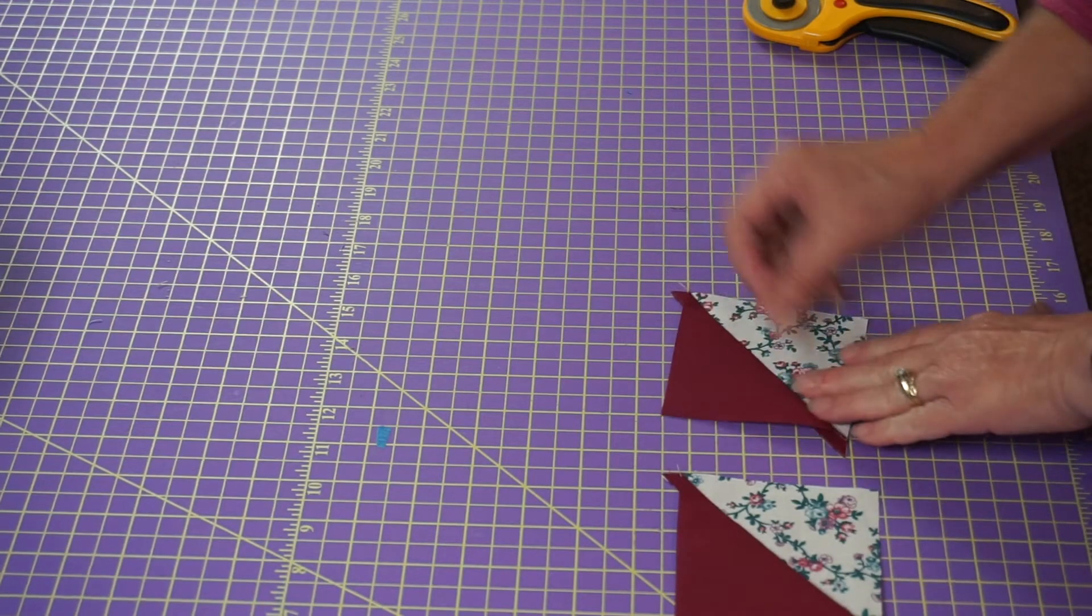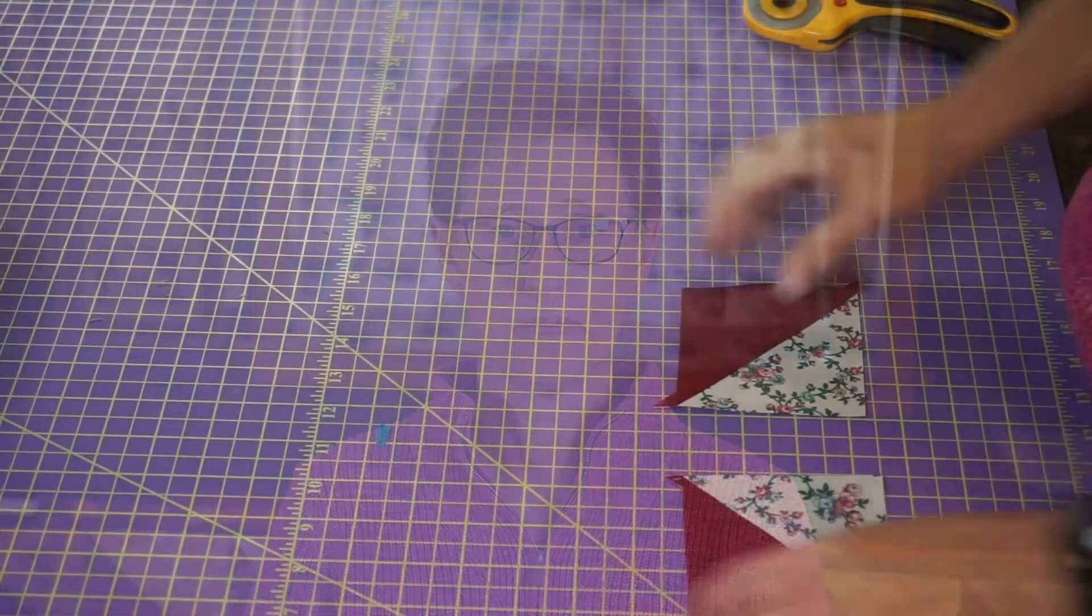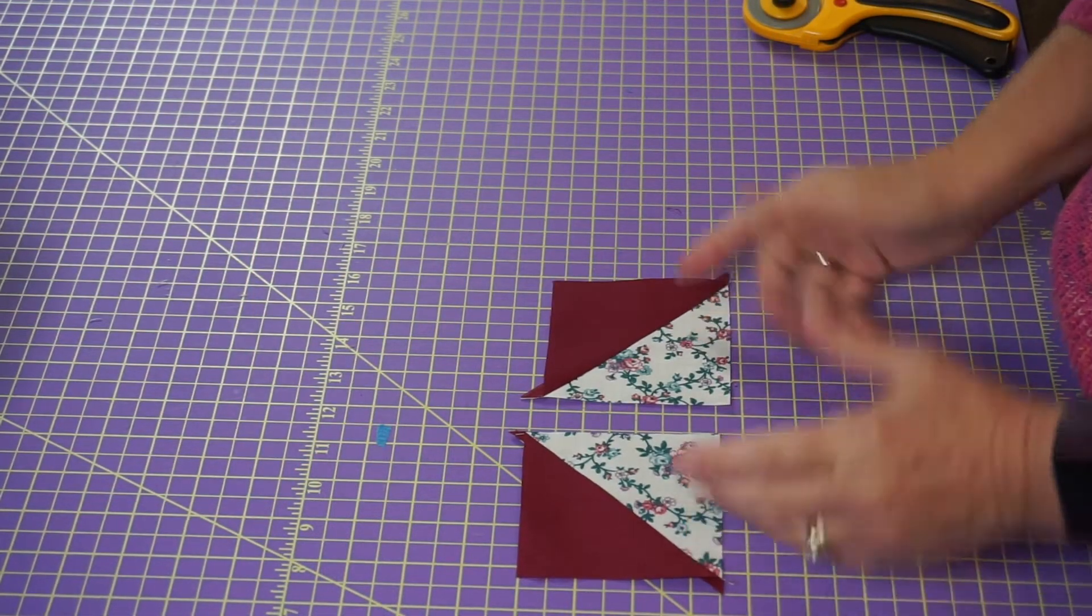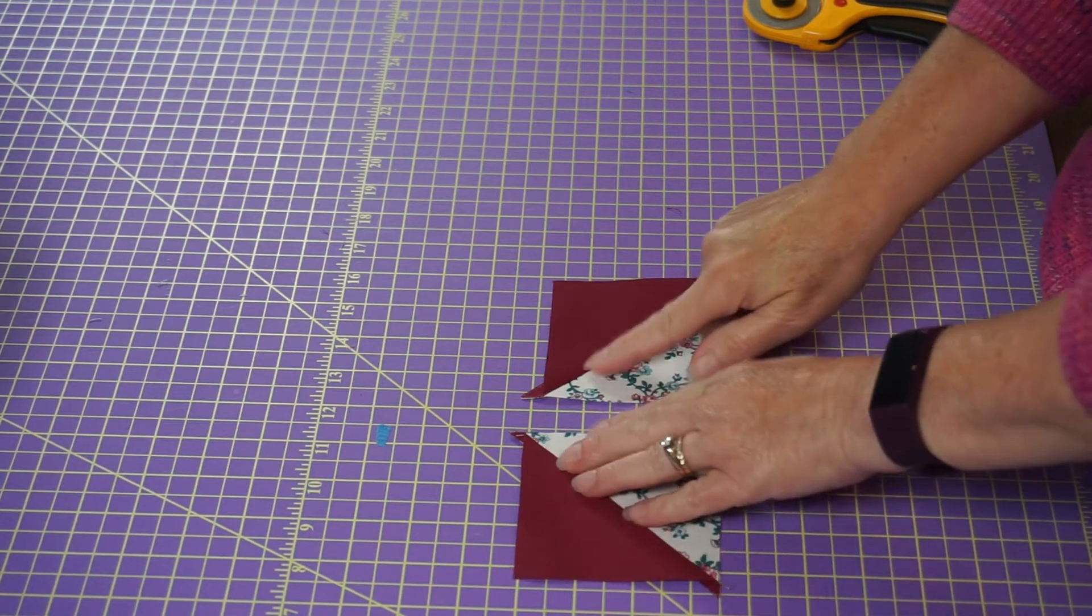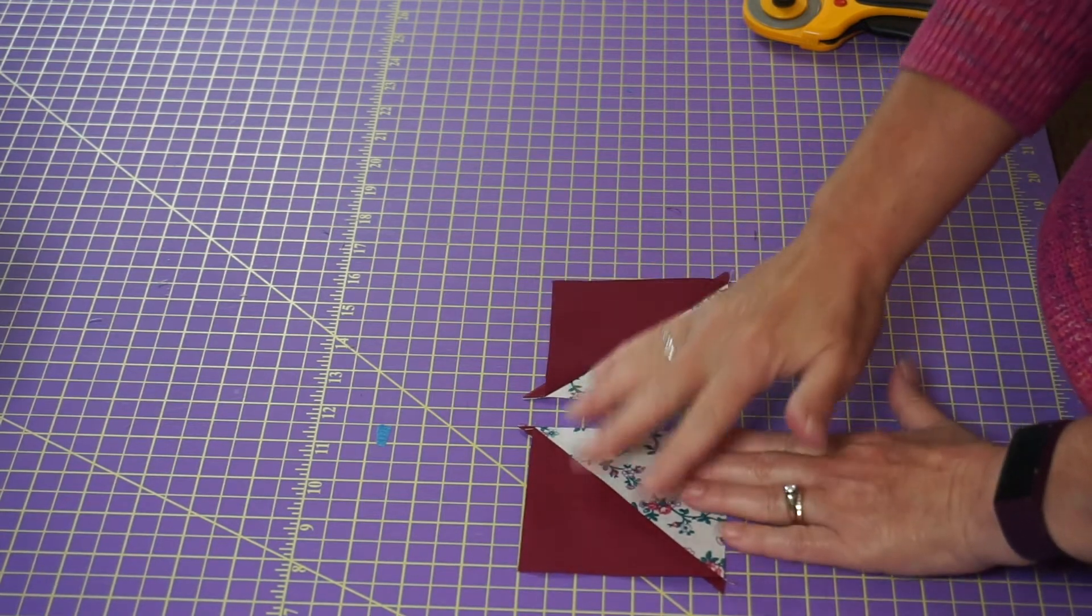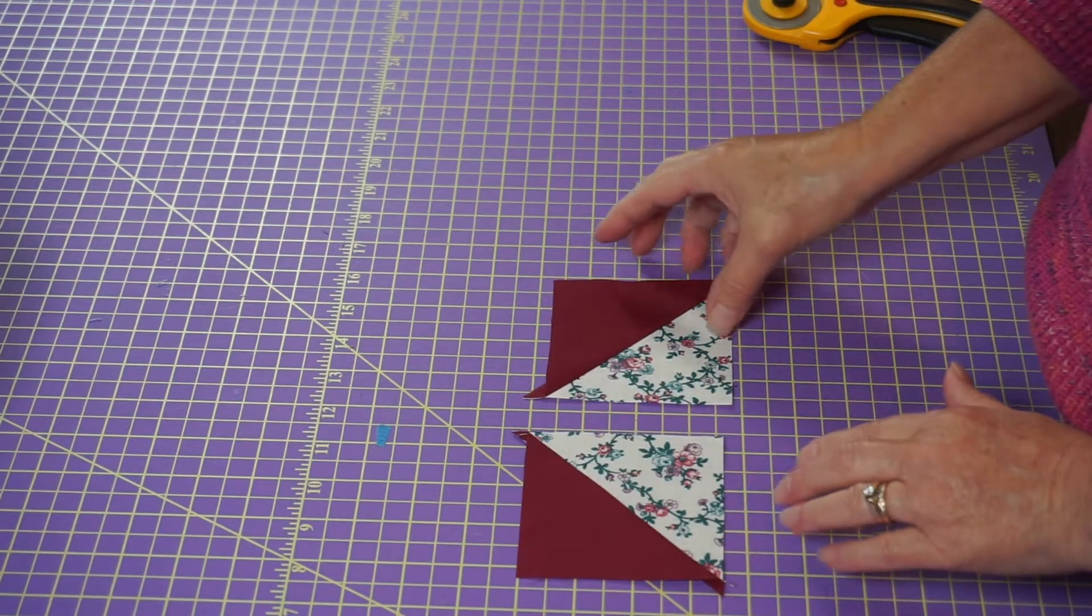And then finger pressing, I've discovered if you finger press first before you go to the ironing board, you really do get a crisper seam. So as you can see, I'm pressing to the dark side. I'm going to take those to the ironing board, because yes, you can do this and move forward, but your blocks will be so much cleaner and crisper and more accurate if you press as you follow these steps.